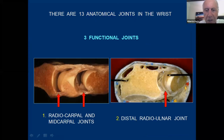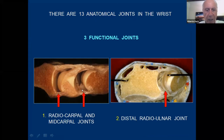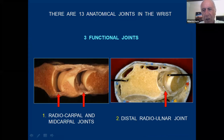So we have the radiocarpal joint and the midcarpal joint, and then as a separate joint we have the distal radio-ulnar joint.